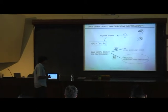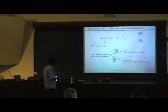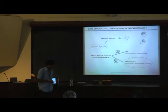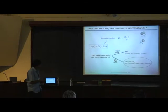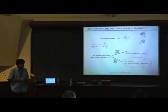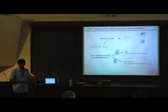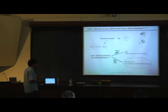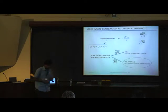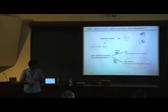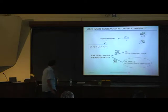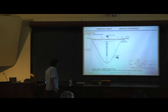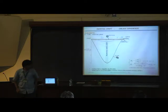For prolate spheroids, the calculation shows that regardless of aspect ratio, inertia selects a unique Jeffrey orbit — the tumbling mode. The interest comes for oblate spheroids, because below a certain aspect ratio it turns out there are two possible Jeffrey orbit choices.